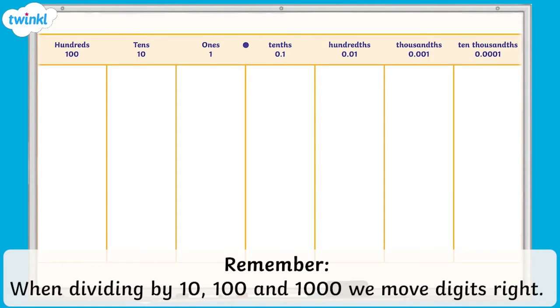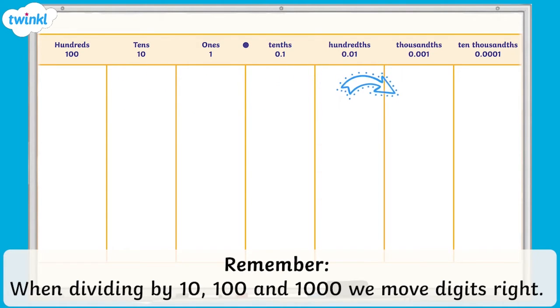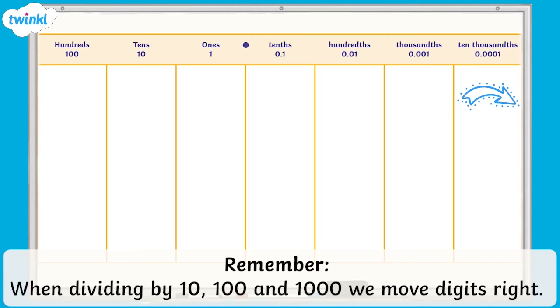The value of each place value column is 10 times smaller than the section to its left. As the number moves one place value column to the right across the place value chart, each digit becomes 10 times smaller, or a tenth of the value that it was.